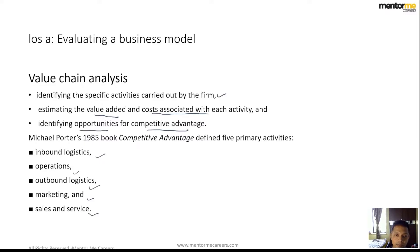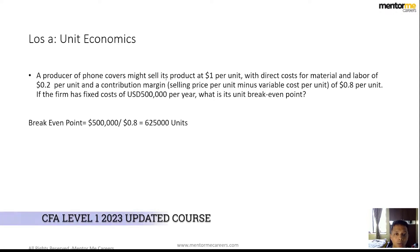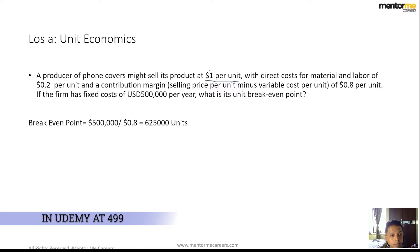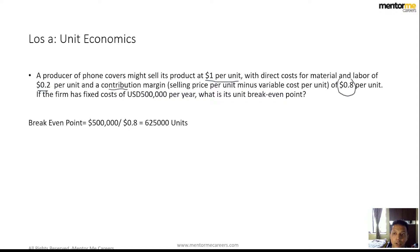Let's take an example to simplify this. One way of understanding whether a business is doing well is to look at unit economics. For example, a producer of phone covers might sell a product at $1 per unit — say an iPhone cover manufacturer — with a direct cost for material and labor of $0.20 per unit. The contribution margin, which is selling price minus direct cost, is therefore $0.80 per unit.